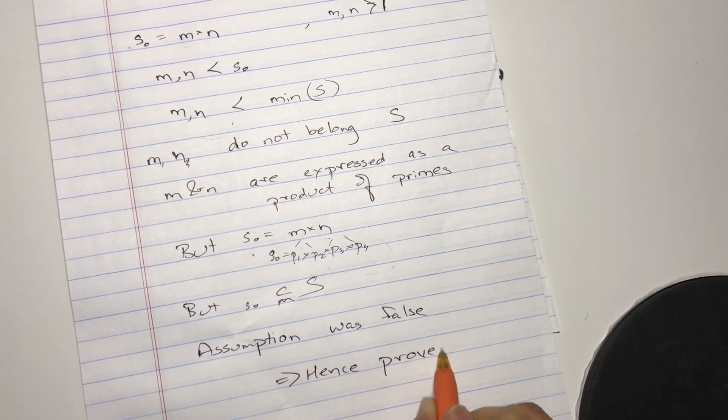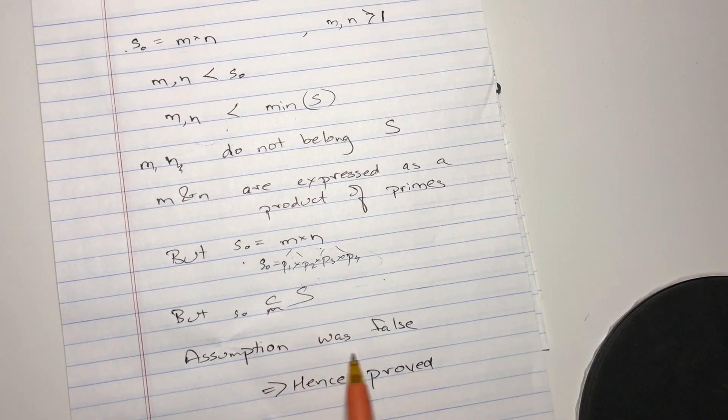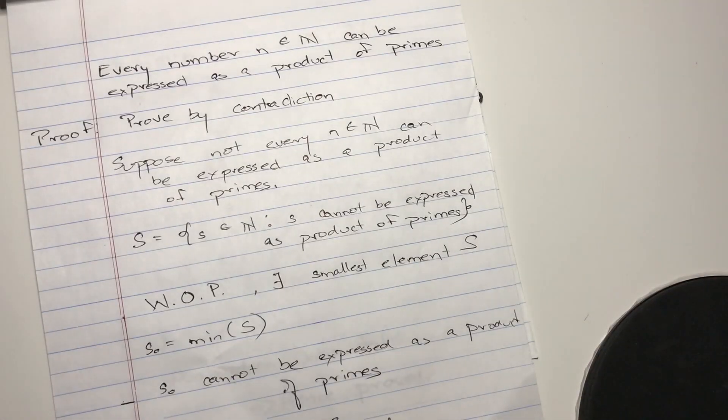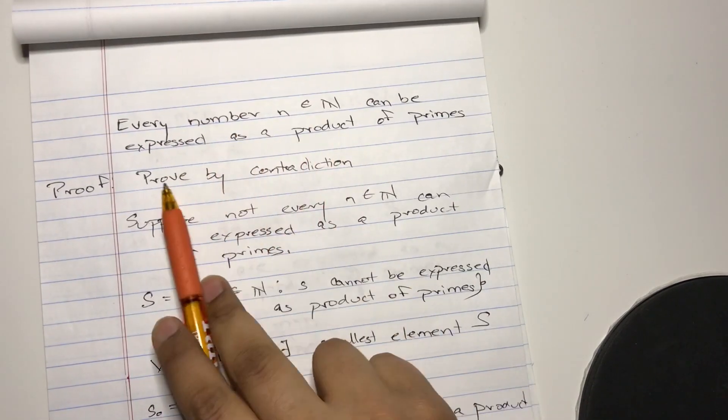Because, well, I guess I explained it enough. S_0 belongs to S, but it can be expressed as a product of primes. This whole thing made no sense. So yeah, every number can be expressed as a product of primes.